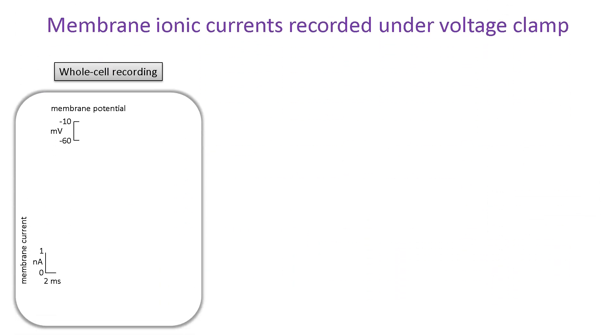Voltage clamp experiments can be performed in a variety of ways. In this experiment, membrane currents were recorded from a voltage clamped neuronal cell using the whole cell configuration of the patch clamp technique. Essentially, that means that the interior of the micropipette connects directly with the interior of the cell and records the current flowing through all of the open ion channels in the entire cell membrane.